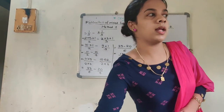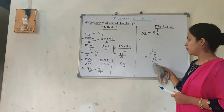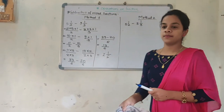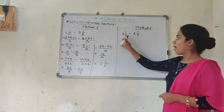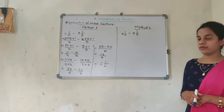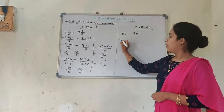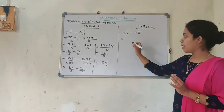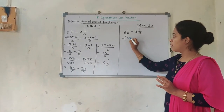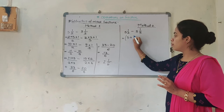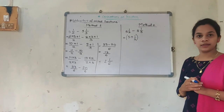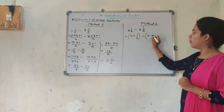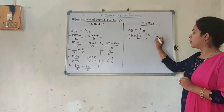Now we will focus on the next part: Method 2. The same question: 5 and 1/2 minus 3 and 1/3. By this method, I am going to separate them. So I write: 5 plus 1/2, minus sign in between, then 3 plus 1/3.